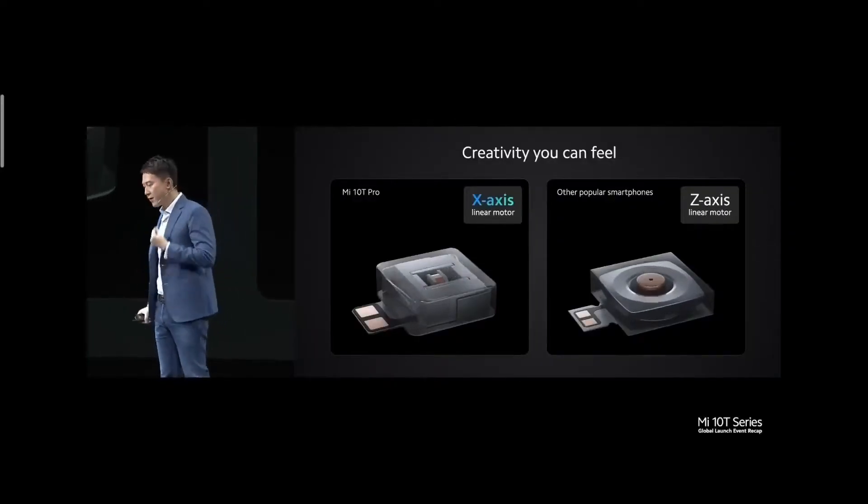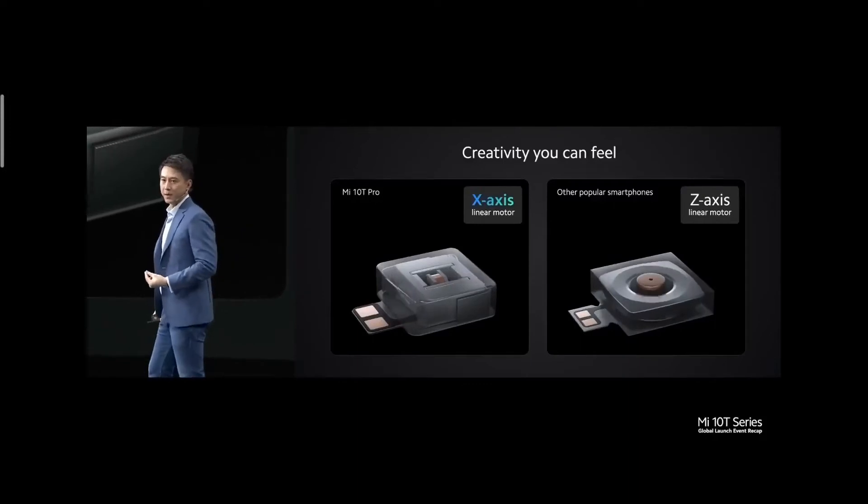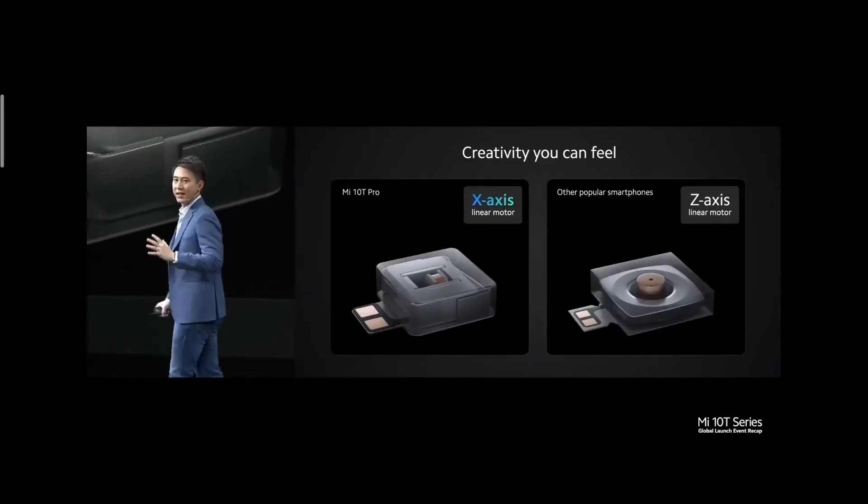The last important thing I want to mention is the haptic motor feedback. They've extended the creative experience to feel as well, with an advanced X-axis linear motor. Usually motors vibrate in a Z-axis, but this one vibrates in the X-axis, which is supposed to improve haptic feedback without causing a bad sensation in your thumb.